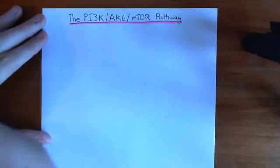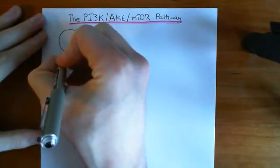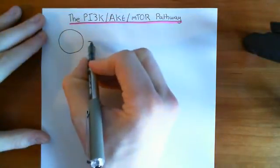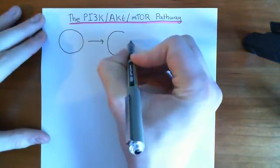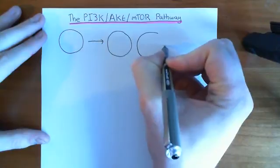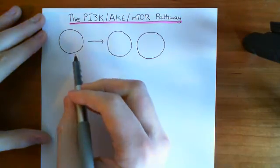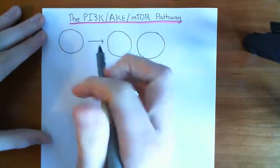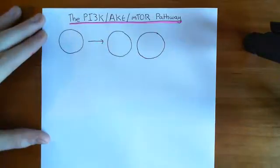Growth factors induce growth within cells — they make cells get bigger. The reason for this is because we're hopefully going to proliferate, so we're going to make the cell divide. In order for the cell to divide in two, the cell firstly has to actually grow in size because it needs to have enough proteins and enough intracellular organelles for two cells rather than just one. Before a cell actually divides into two, it has to grow in size so that it's big enough to split in two — otherwise you'd get two cells that were half the size.